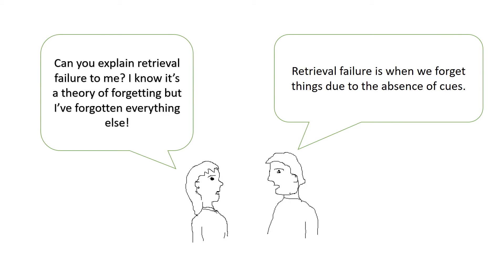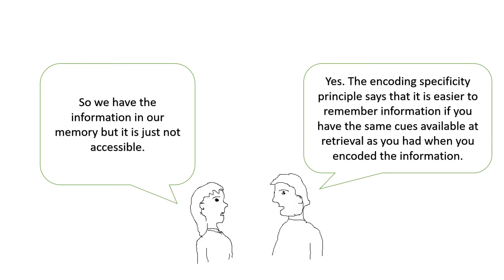So what is the theory of retrieval failure exactly? It says that we forget information due to the absence of cues. Retrieval failure says that we have the information in our memory, but it's just not accessible to us. The encoding specificity principle says that it is easier to remember information if you have the same cues available at retrieval as you had when you encoded the information.